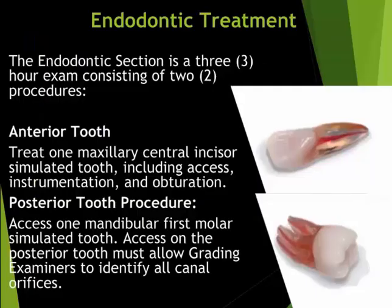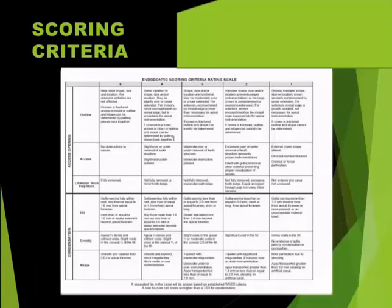3D printed acrylic teeth are used to demonstrate endodontic competency using maxillary central incisors and mandibular first molars. Practice teeth are available from Accadental. They will not be the exact same teeth on which you'll be tested for the exam; however, the materials will be the same as the exam teeth. The Endodontic Scoring Criteria Rating Scale is found in the Endodontic Section of the Candidate Guide. REB examines candidates with varying educational backgrounds, and schools may teach different endodontic procedures. REB does not look for one standard procedure and scores according to the published criteria.